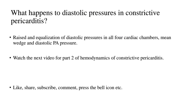We've talked about the various flows and systolic pressures in the cardiac chambers with constriction. What happens to the diastolic pressures in constrictive pericarditis is that there is raised and equalization of the diastolic pressures in all four cardiac chambers, as well as the mean wedge pressure and diastolic PA pressure. You'll need to watch the next video for part two of hemodynamics of constrictive pericarditis. Like, share, subscribe, comment, and press the bell icon — see you next time.